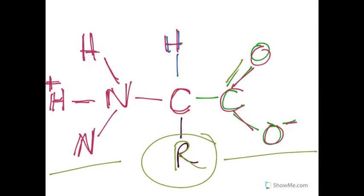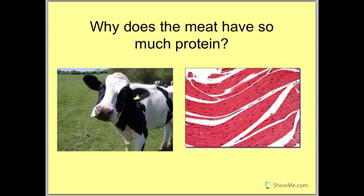Shape is super important — if a protein's not the right shape, it can't do its work, or it might only have partial function. Think about that: only 20 amino acids to make up all the proteins of all the living things on Earth. Why does the meat have so much protein? Beef comes from the muscles of the cow, and muscle cells are packed with lots of protein machinery that make small motions that create larger muscle motions. There are actually a lot of proteins within the muscle, and you can also find proteins in lots of different plants as well as animals.